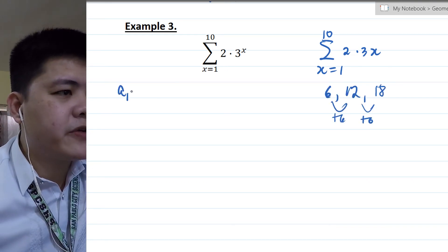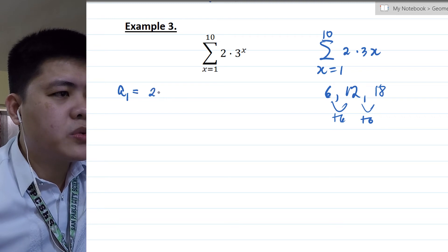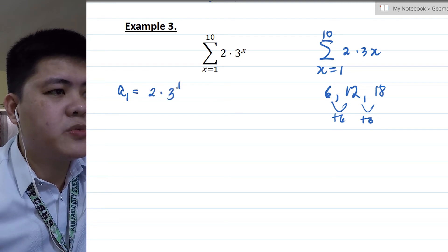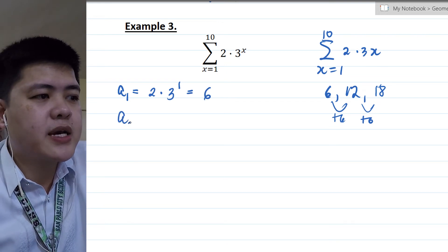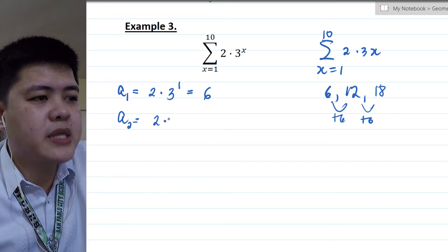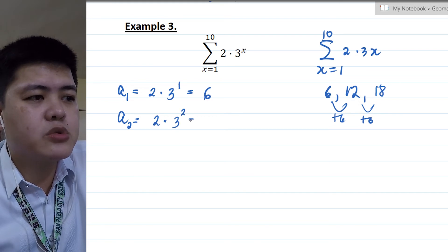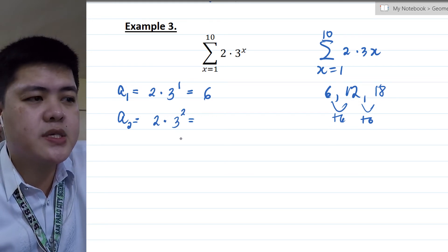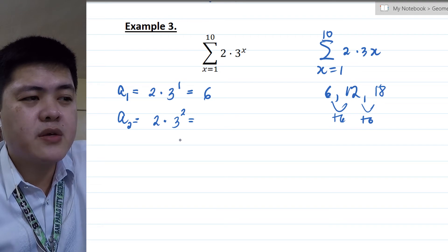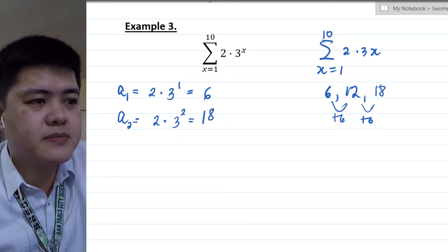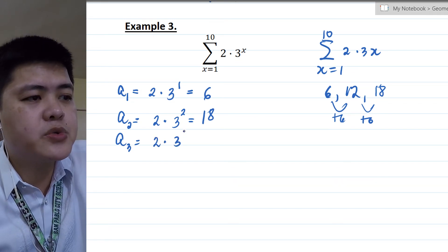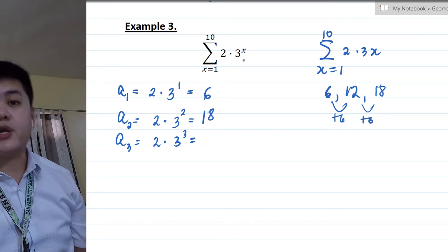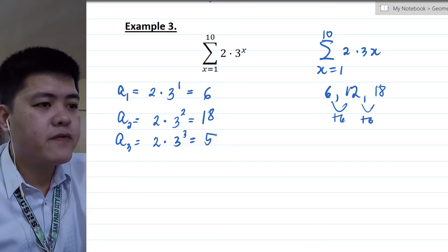Your first term is 2 times 3 raised to 1, which is equivalent to 6. Your second term is 2 times 3 raised to 2, which is 3 squared, that's 9 times 2, that's 18. And your A sub 3 is 2 times 3 raised to 3. 3 raised to 3 is 27 times 2, that's 54.